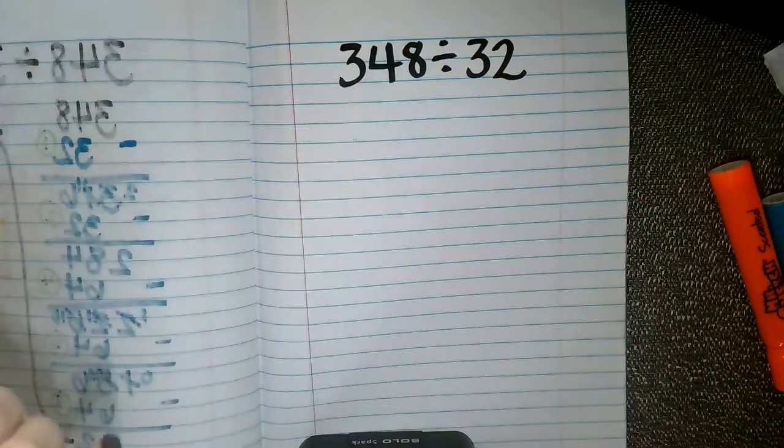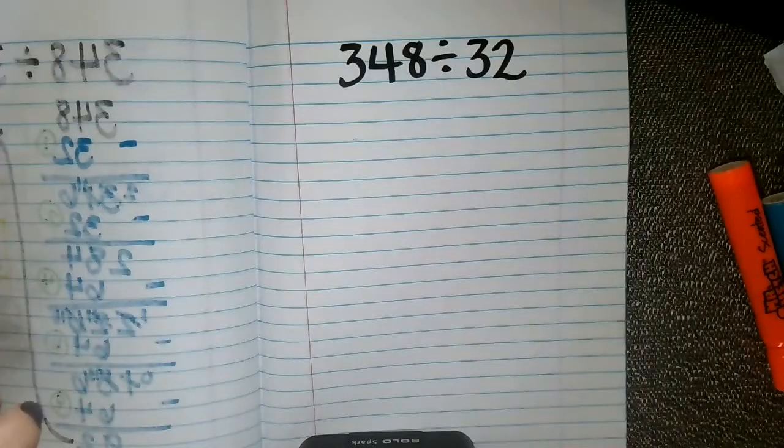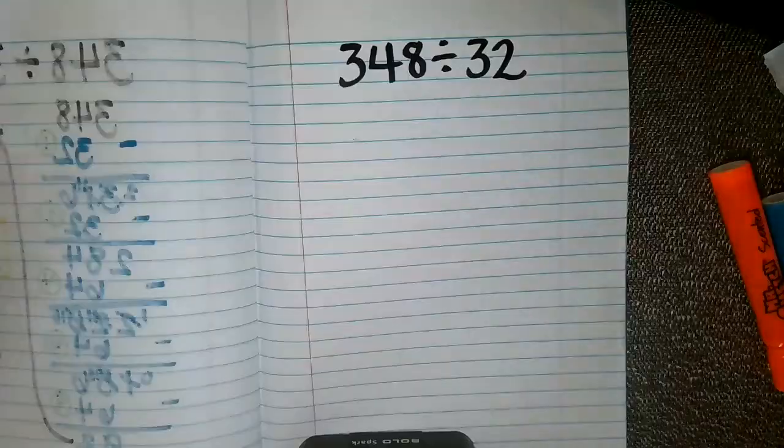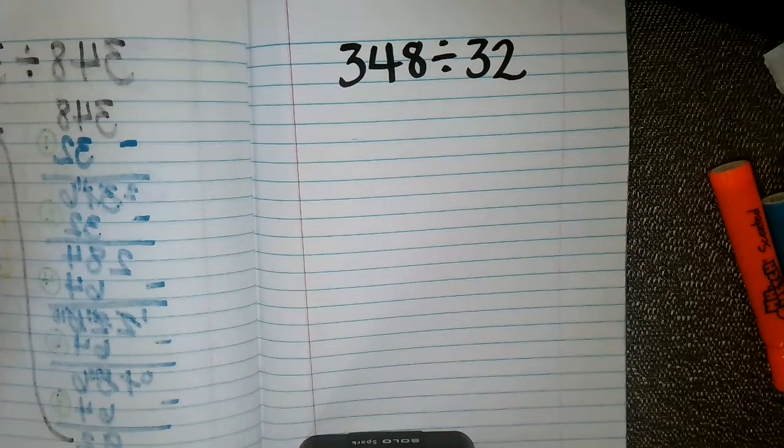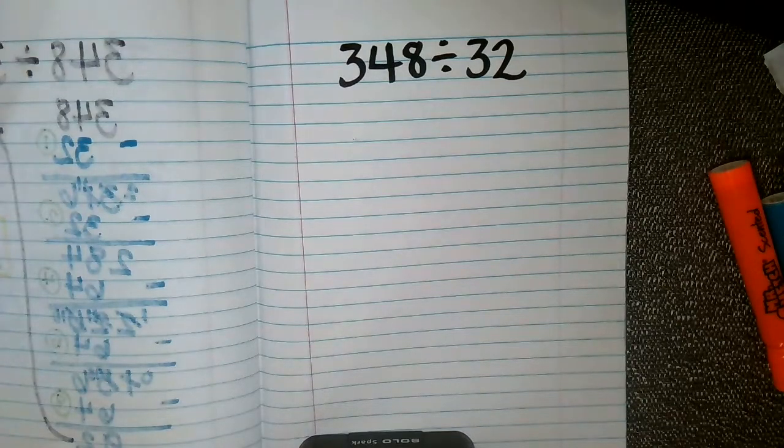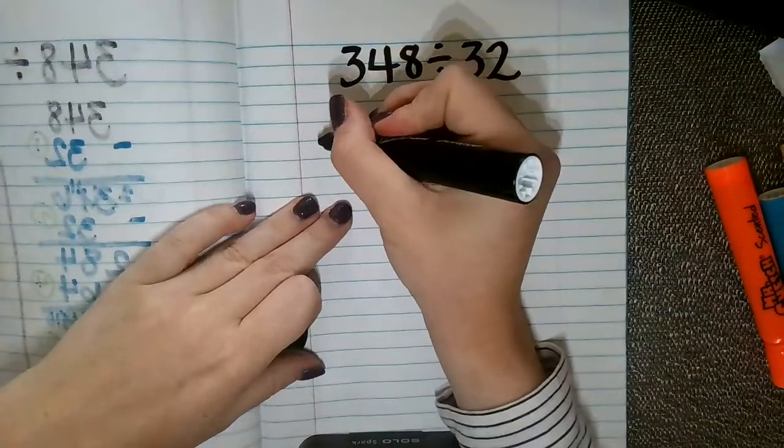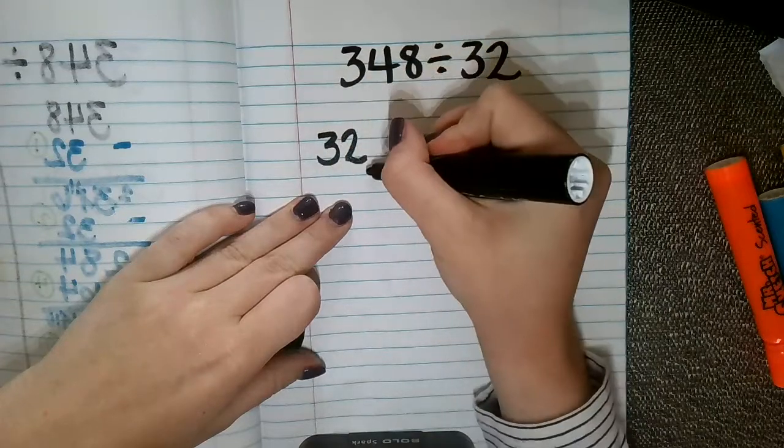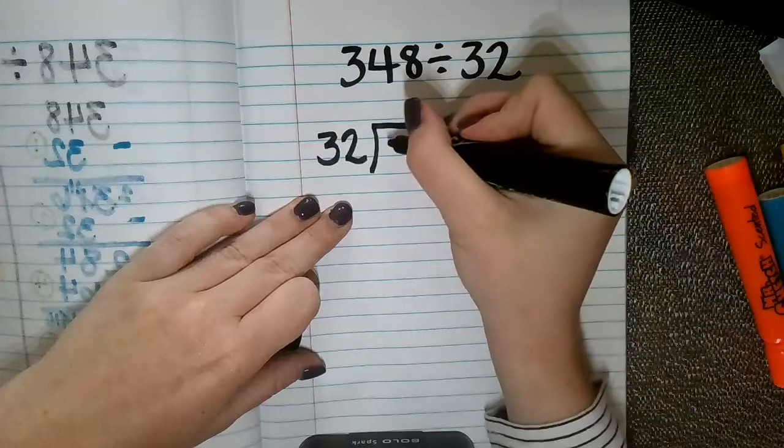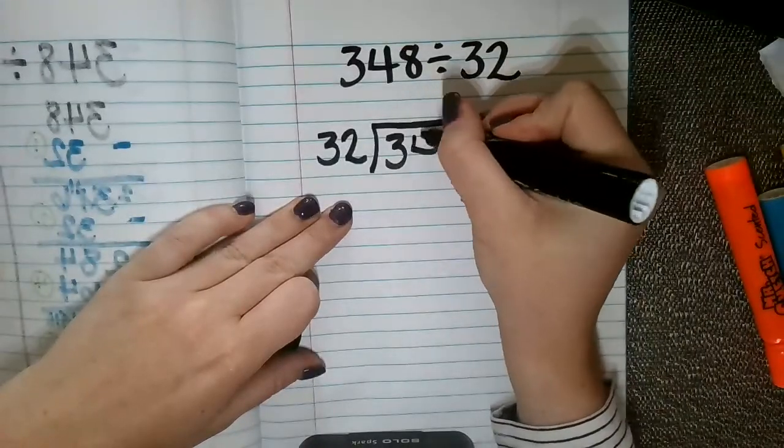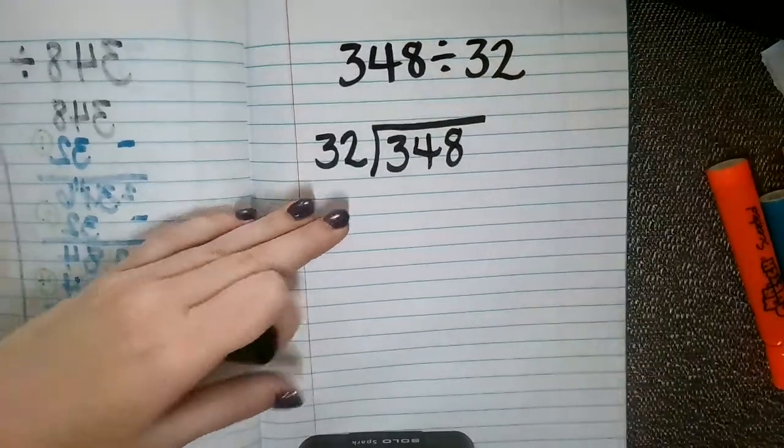So we're going to still use the same dividend and divisor that we have been using for the other practices. So 348 divided by 32, if you want to go ahead and write that down. And then we know that our divisor goes on the outside because that's how many groups we're going to see fit into our dividend, which in this case is our larger number 348.